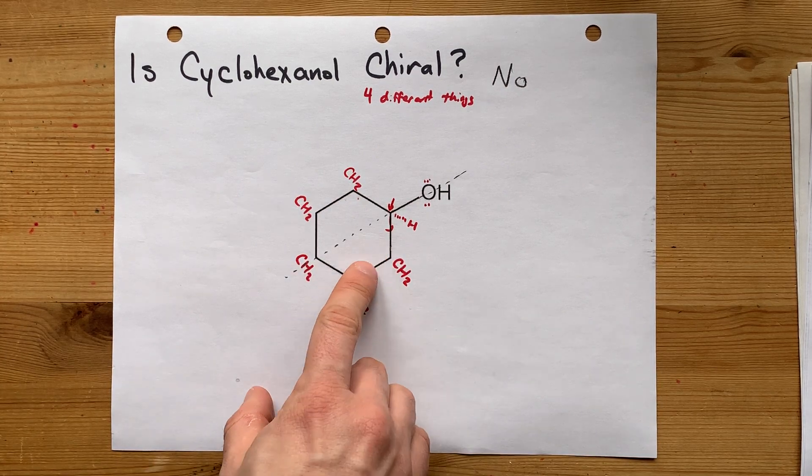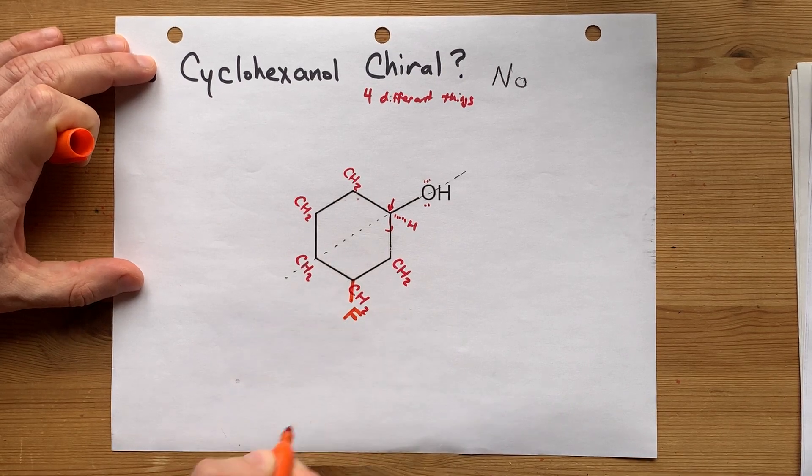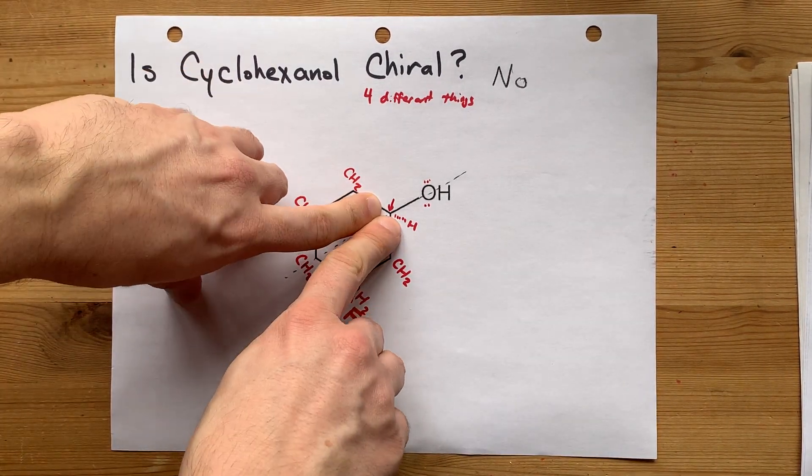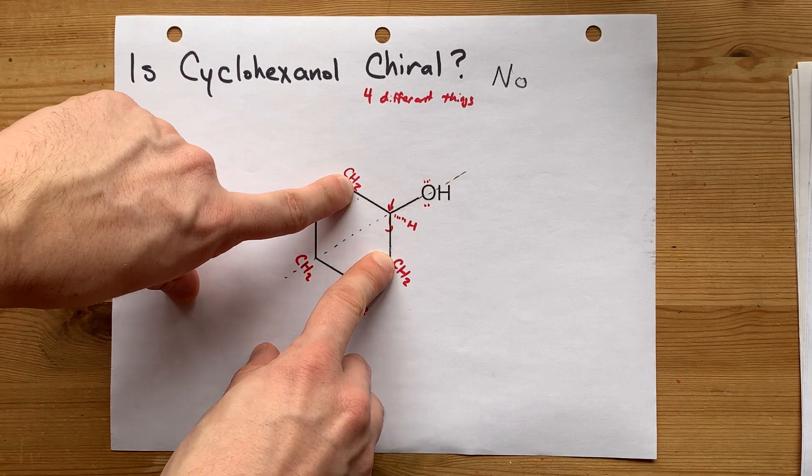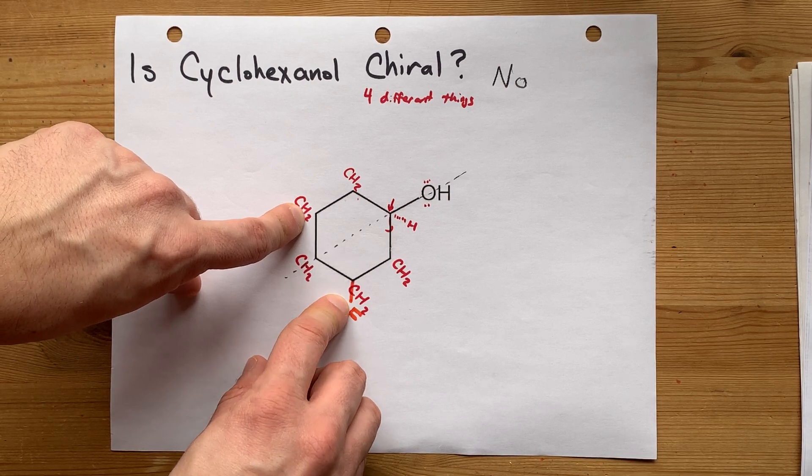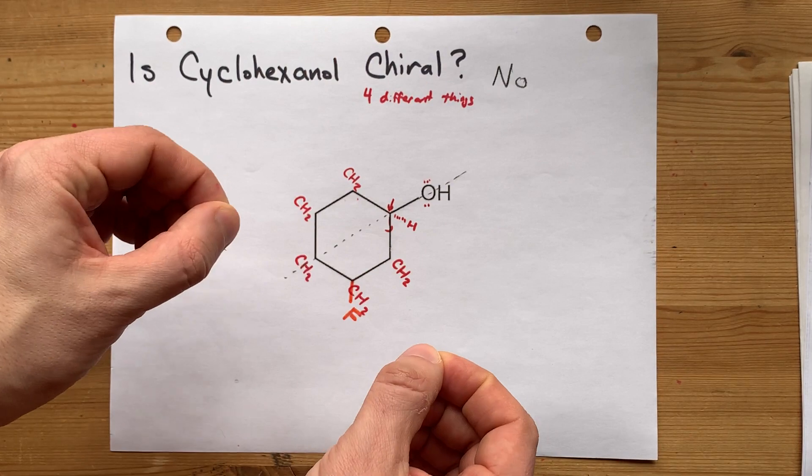If there was a single extra thing attached to any of these, maybe there was like an F on this one, then all of a sudden, going in either direction, CH2, CH2 versus CHF, because now there's an F here, all of a sudden those aren't the same kind of things, and it becomes a chiral molecule.